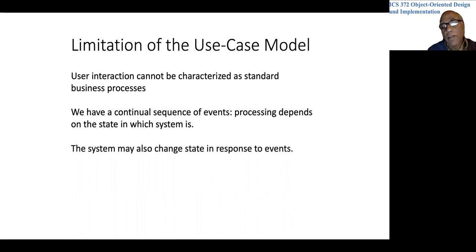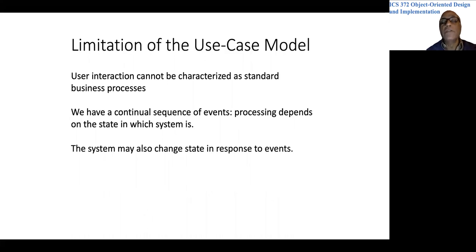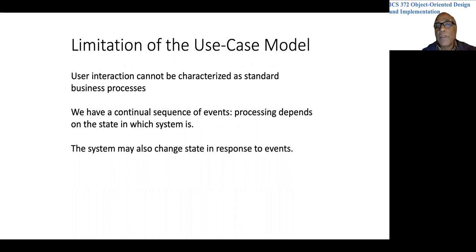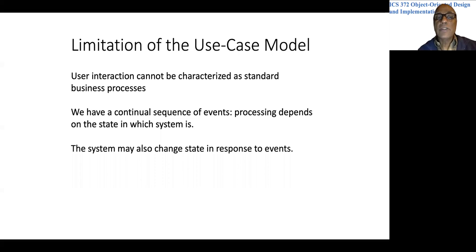The use case model is appropriate when you have a set of well-defined business processes and the number of those processes is not too large. Here it is impossible to characterize the interaction between the user and the system in terms of use cases. The number of states is not infinite, whereas in a library system the number of states is potentially infinite — you can have all kinds of situations.